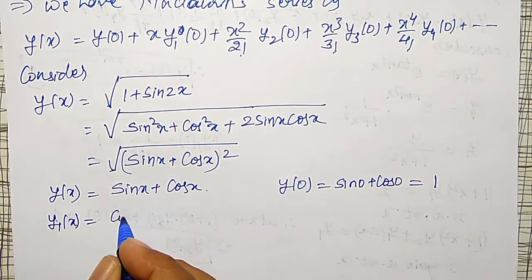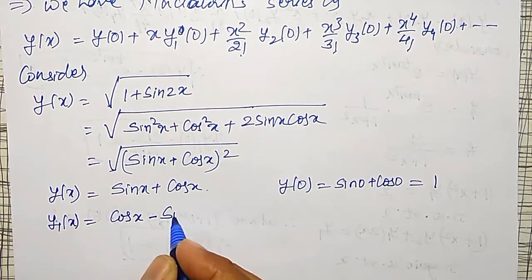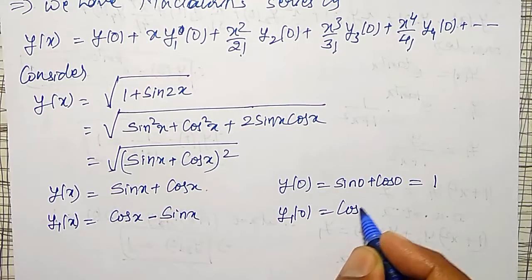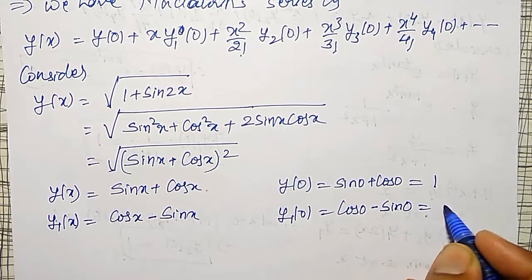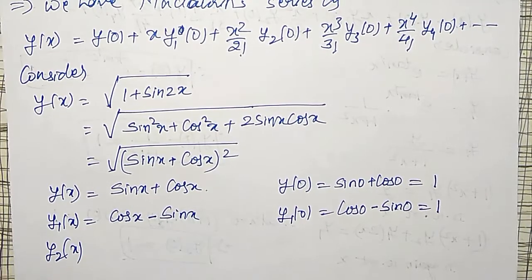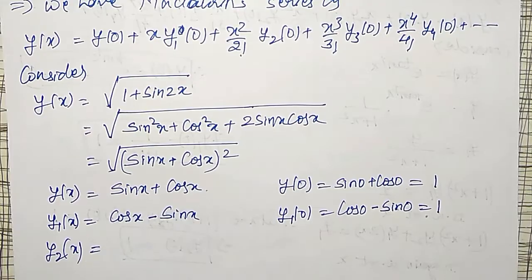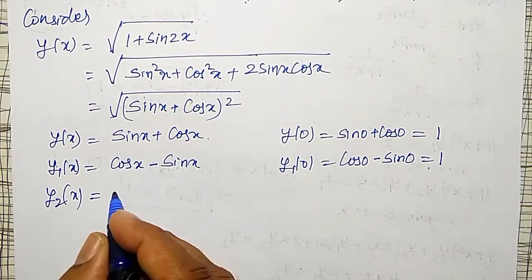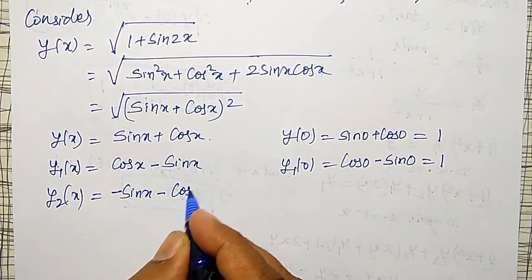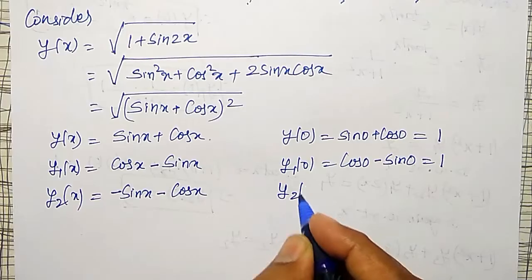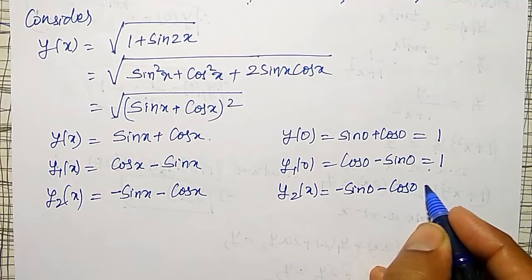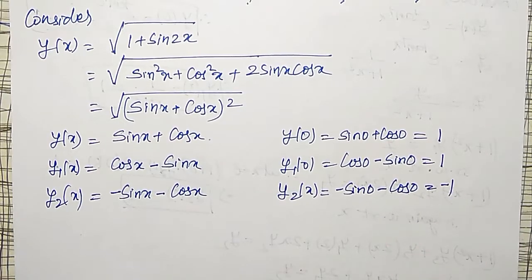Sin 0 is 0, cos 0 is plus 1. Then y1(x), derivative of this will become cos x minus sin x. Therefore y1 at 0 will become cos 0 minus sin 0, so this is plus 1 again. Whereas y2(x), my y2(x) is equal to differentiation of cos x will become minus sin x minus differentiation of sin x will become minus cos x. Therefore y2 of 0 will become minus sin 0 minus cos 0, which is about minus 1.